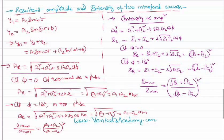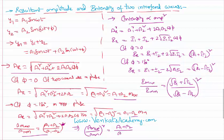We can also express this in terms of amplitude. Amplitude maximum to amplitude minimum is just (a1 plus a2) by (a1 minus a2) — with no square. If we square that, it becomes (a1 plus a2) by (a1 minus a2) whole square. So we can also express I maximum to I minimum in terms of amplitude as (a1 plus a2) by (a1 minus a2) whole square.